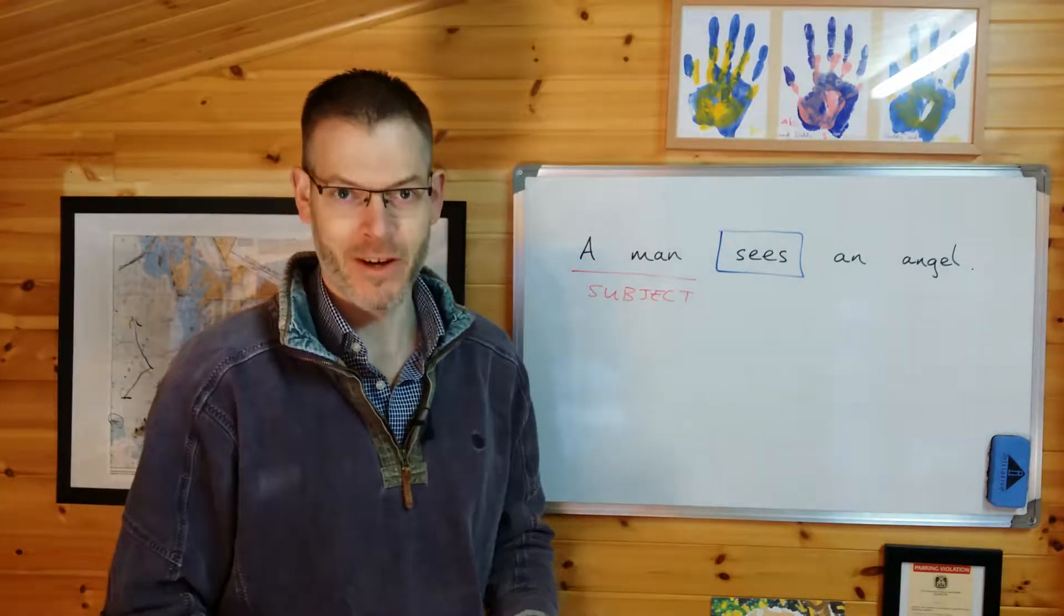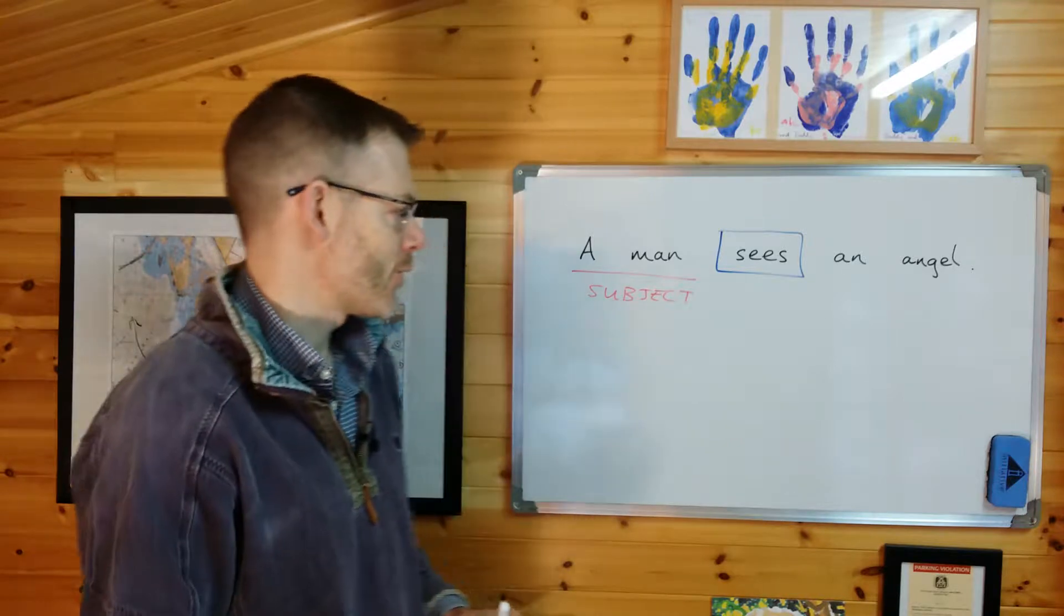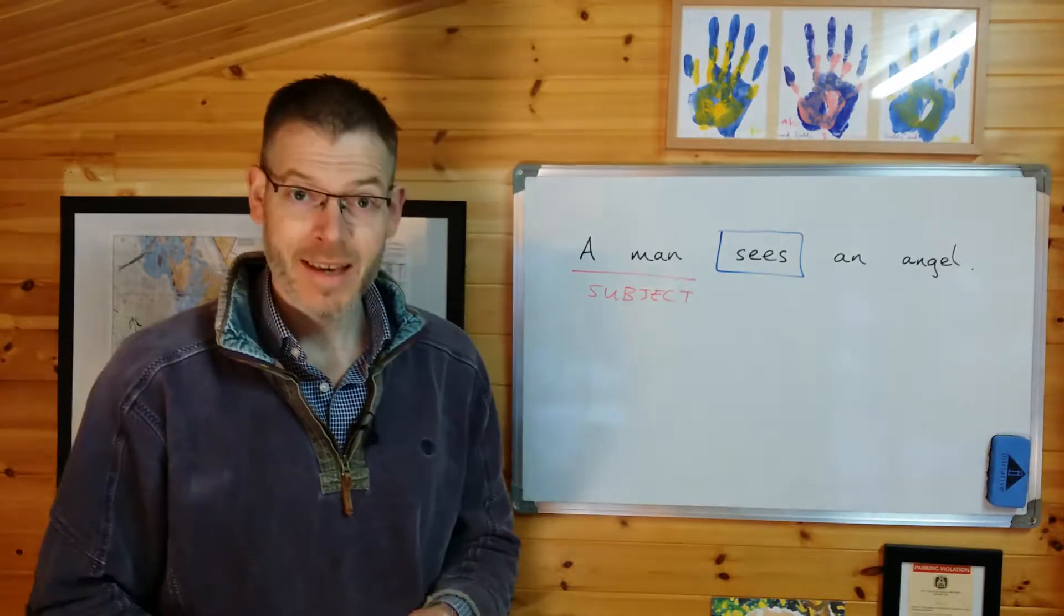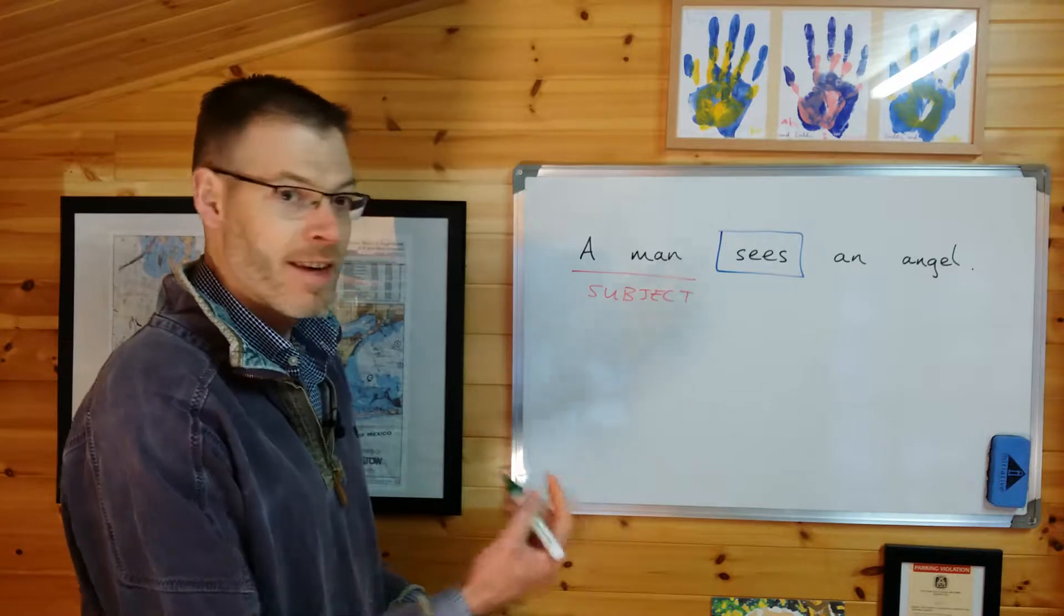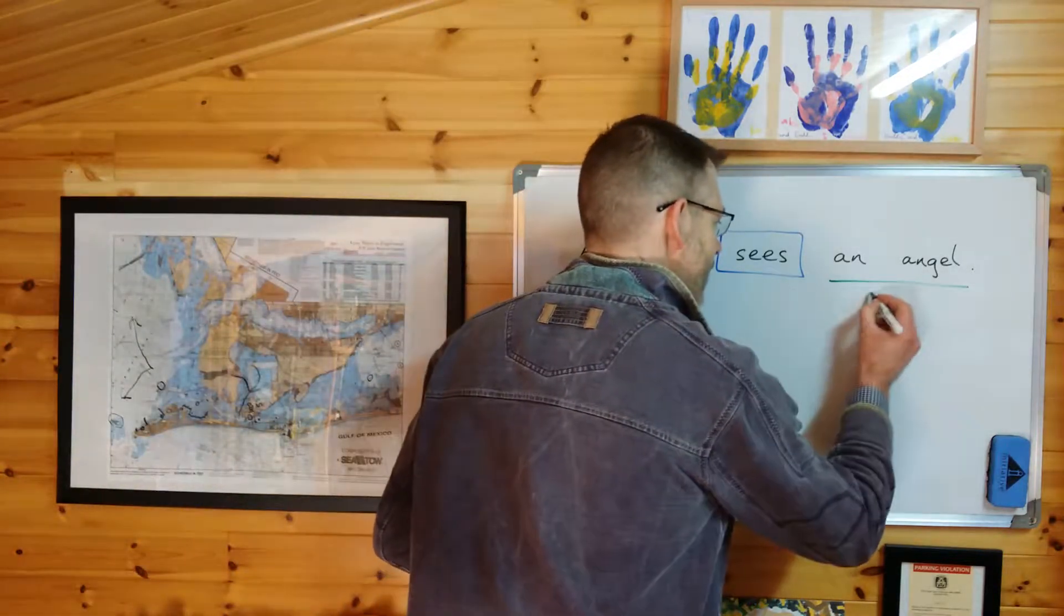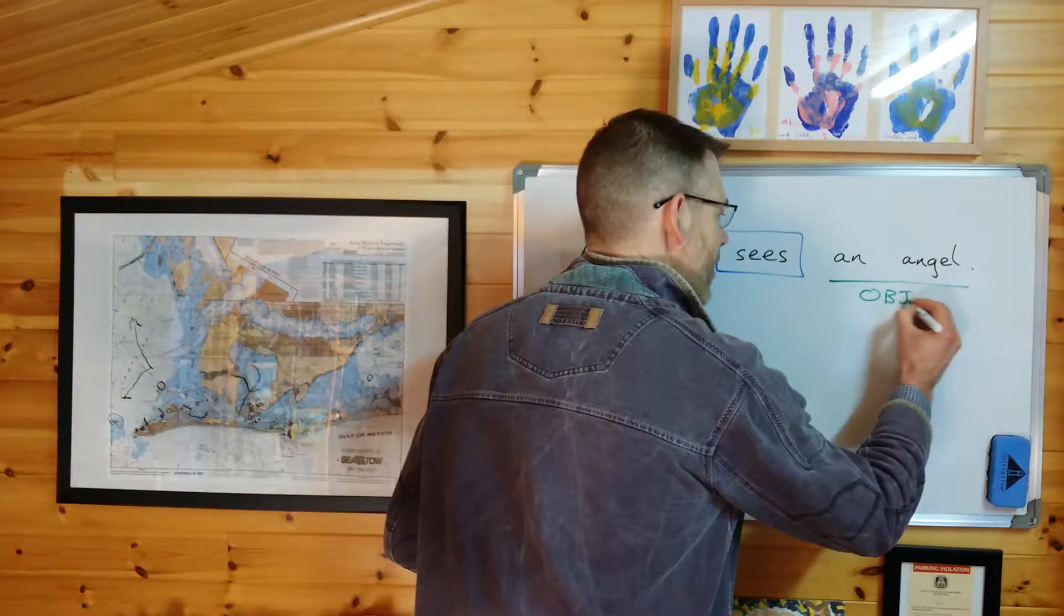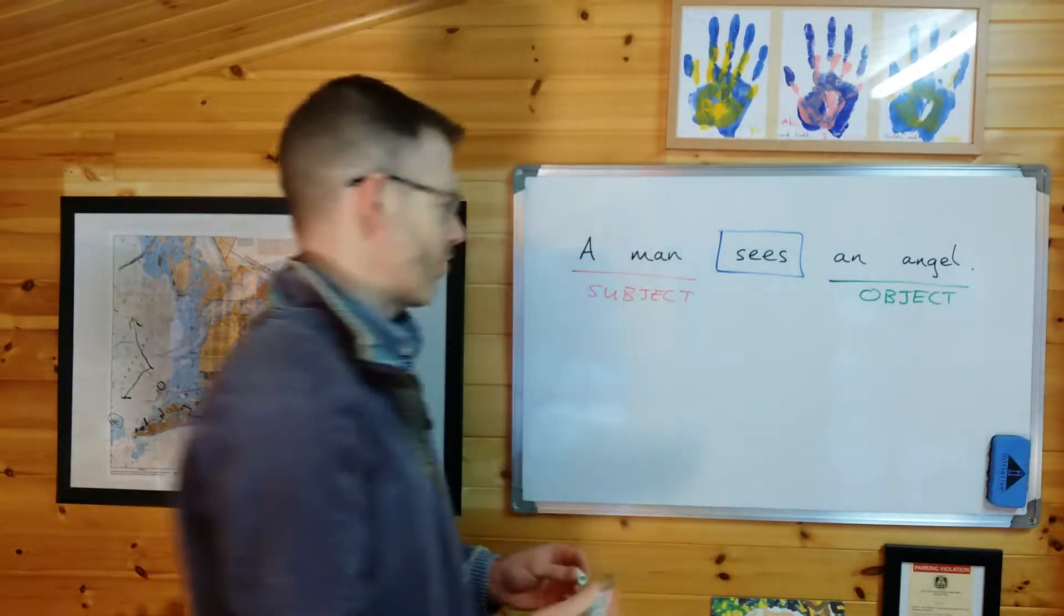Okay, now who is the object of the verb then? Very simple, very straightforward. The object of the verb is the person or the thing that's having the action done to them. And in this case, the object is an angel.